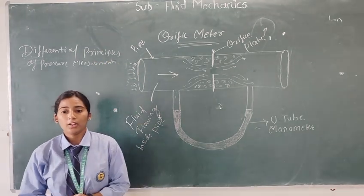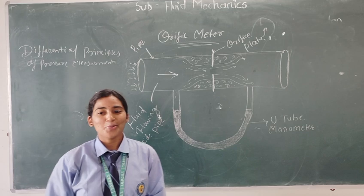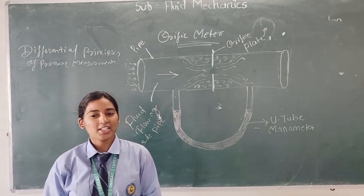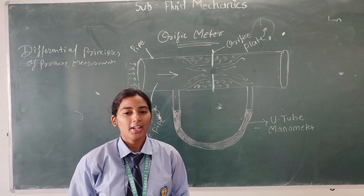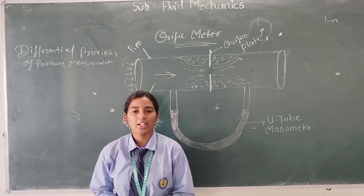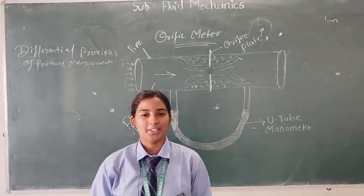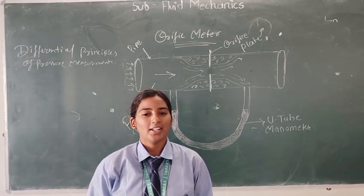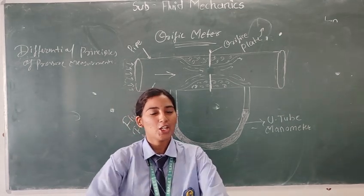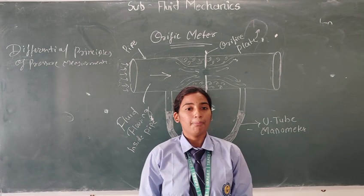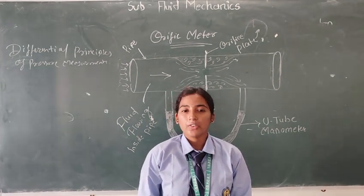When a fluid whose flow rate is to be determined is passed through an orifice meter, then there is a drop in pressure between inlet section and outlet section of orifice meter. The drop in pressure can be measured using a differential pressure measuring instrument. Because as per Bernoulli's principle,